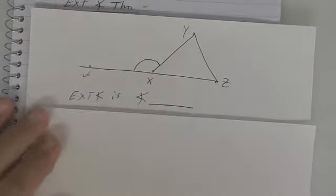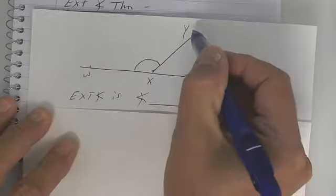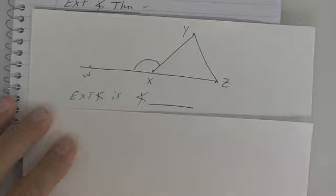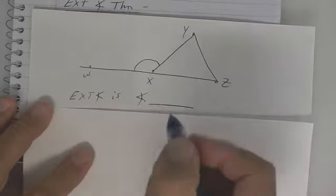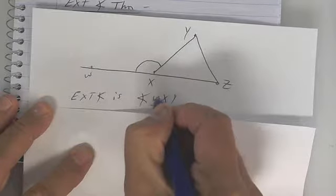Does anybody know what it would be, that exterior angle? Nobody has a clue how to name that? Say it again. You could say W, X, Y. What's another way I could say it? Y, X, W. But I'll go with that one. Very good. W, X, Y. Excellent.